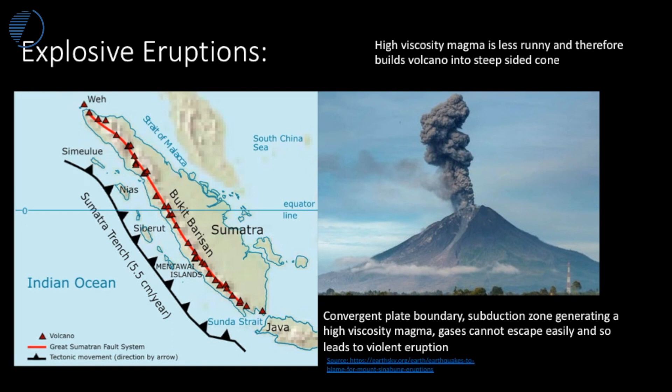These zones produce stratovolcanoes — very steeply sided volcanoes. These volcanoes are built up from magma which is very viscous and slow flowing, which is one of the reasons why they form steeply sided cones. Additionally, the gas cannot escape as the magma erupts, and so you can see there's a violent eruption of tephra and ash into the Earth's atmosphere. These are very dangerous and create many dangerous hazards.